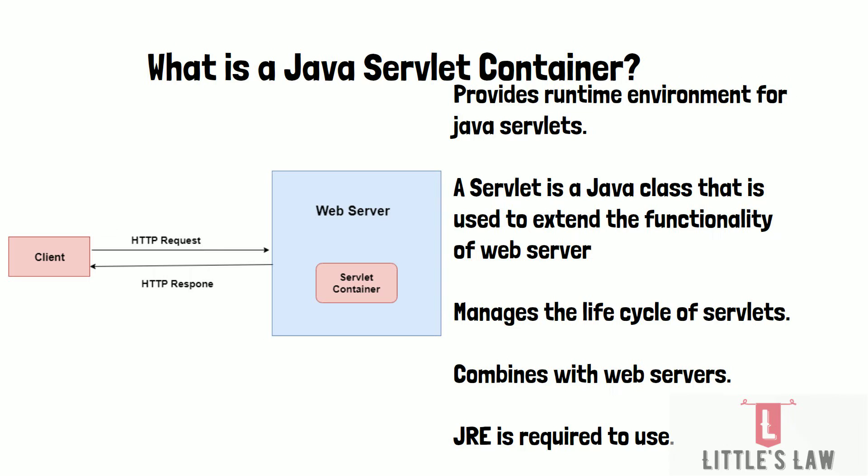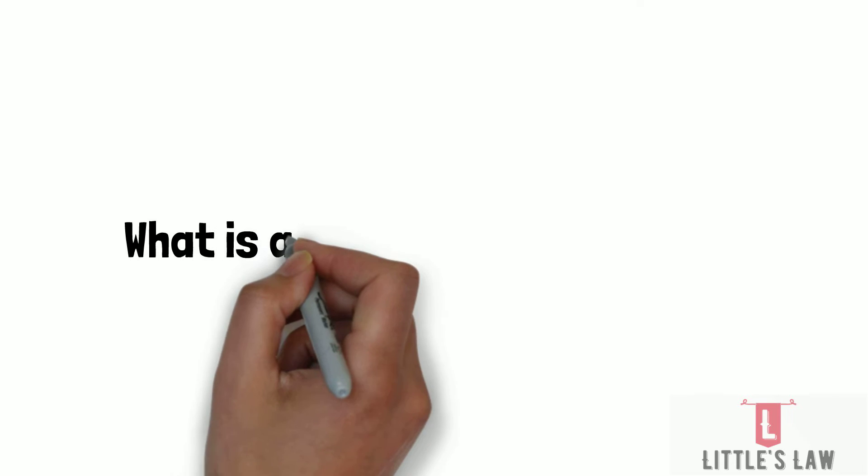To use a Java servlet container, just like with Apache Tomcat, we need a JRE installed on our machine. We can then download and install a servlet container of our choice and deploy our servlets to it by copying the servlet class files to the appropriate directory in the container's installation. The container will automatically detect and start up the servlets, making them available for use.